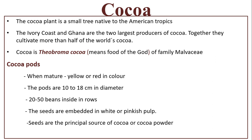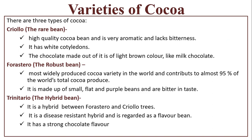Cocoa pods: when mature, they are yellow or red in color. The pods are 10 to 18 centimeters in diameter, with 20 to 50 beans inside in rows. The seeds are embedded in white or pinkish pulp. Seeds are the principal source of cocoa or cocoa powder.